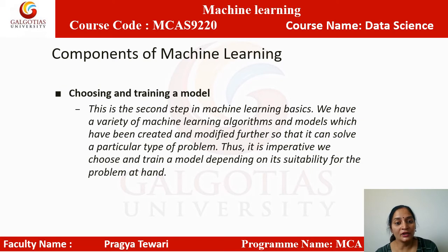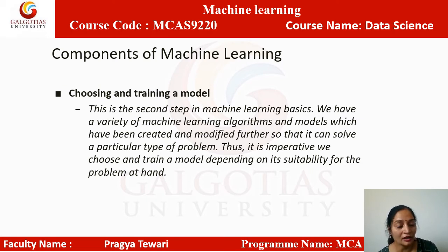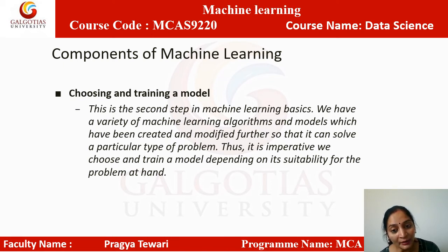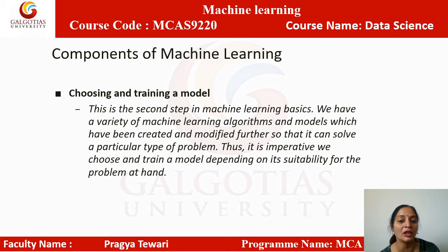The next component is choosing a training model. After collecting and preparing data, we select a machine learning algorithm and model. We have a variety of machine learning algorithms and models that have been created and modified to solve particular types of problems. It is imperative that we choose and train a model depending on its suitability for the problem at hand.